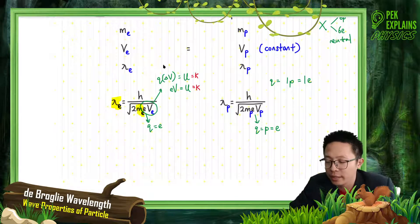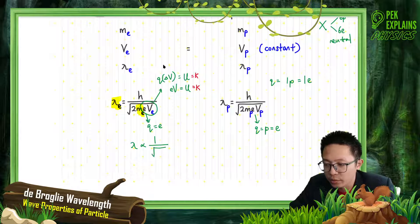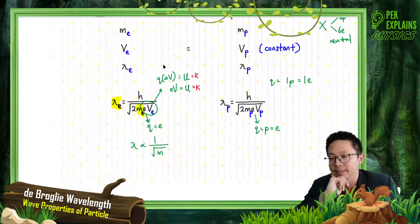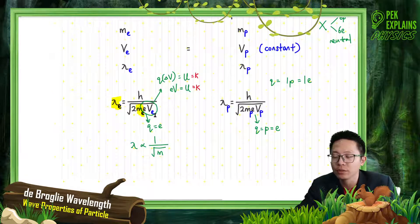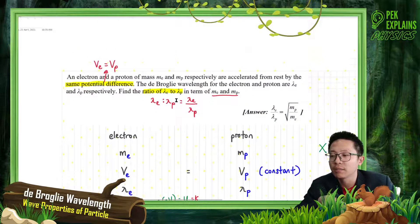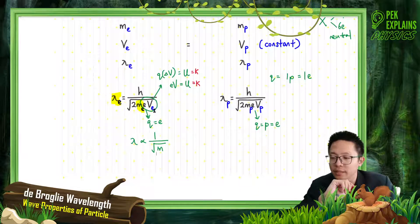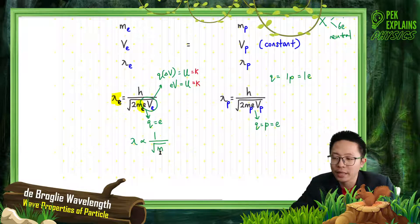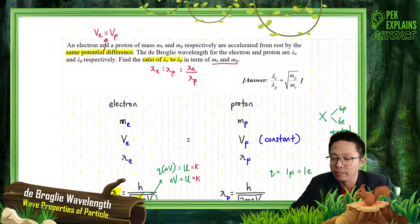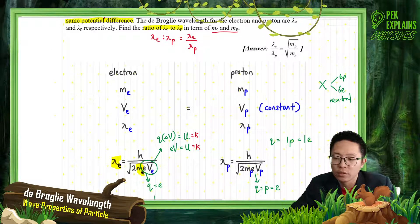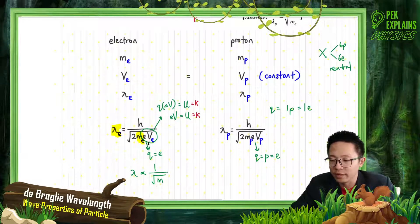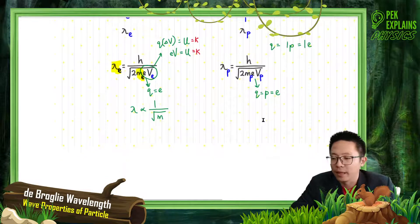Since all other quantities — H, two, charge, and voltage — are the same and cancel out, we can write: lambda is proportional to one over square root of mass. Only the mass of electron is different from mass of proton, so lambda of electron will be different from lambda of proton. Only the lambda and mass are different; all other terms cancel off.